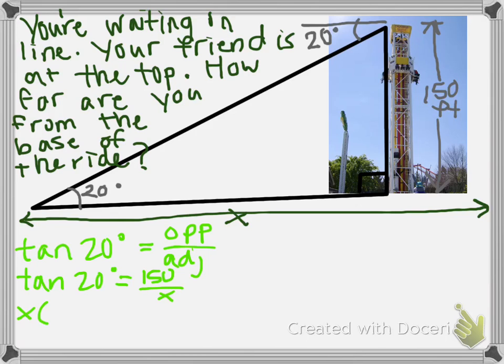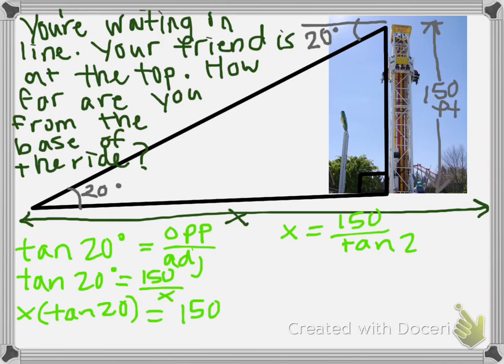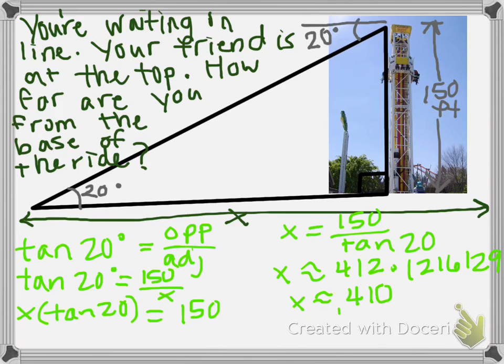We will use our algebra skills and multiply both sides by x, giving us x times tangent of 20 equals 150. Then we divide both sides by tangent of 20 to get x by itself. So x is approximately 412.1216129, and we want to round to the nearest 10 feet, giving us 410 feet to the base of the ride.